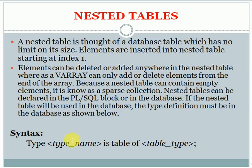Looking at the nested table syntax: TYPE type_name IS TABLE OF table_type. You can identify the differences in syntax: Varray has the keyword VARRAY, indexed by table has the keyword INDEX BY, and nested table is simply IS TABLE OF with no INDEX BY clause.